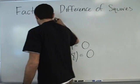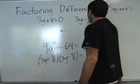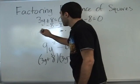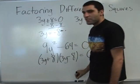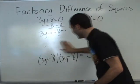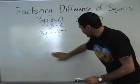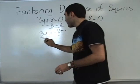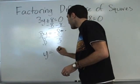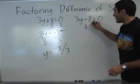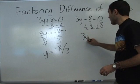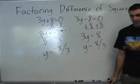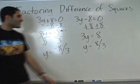So that's 3y plus 8 equals 0, and 3y minus 8 equals 0, and we solve. Minus 8 — 3y equals negative 8. Divided by 3: y equals negative 8 over 3. Any questions about process here? Two solutions.